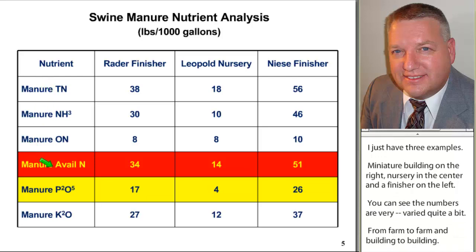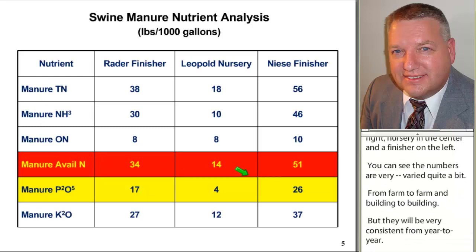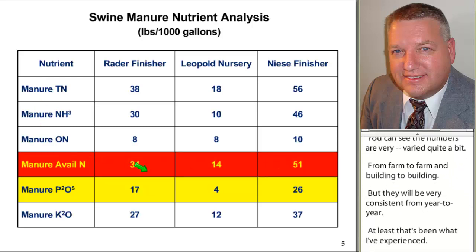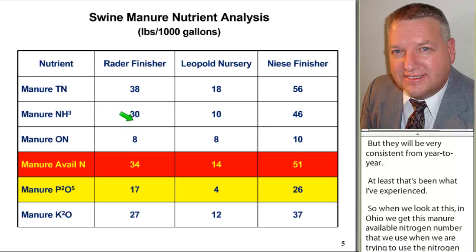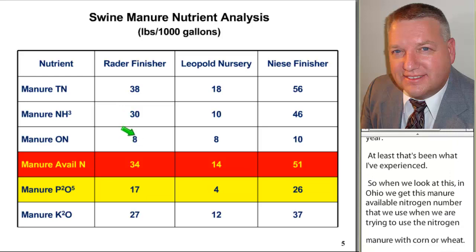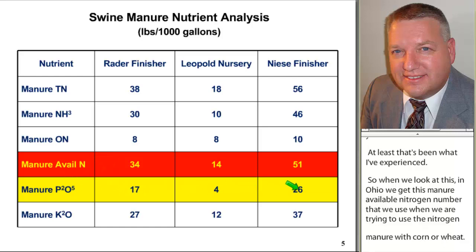In Ohio, we use a manure-available nitrogen number when trying to use the nitrogen in manure with corn or wheat. Essentially, the way this number is arrived at is the labs take the ammonia portion, which is readily available to crops, then figure about half of the organic portion will mineralize over the crop season — and that's where you end up with the available manure nitrogen number. You can also see our P2O5 down here, which we always have to be cognizant of in terms of how much we're putting on.